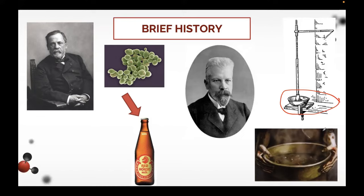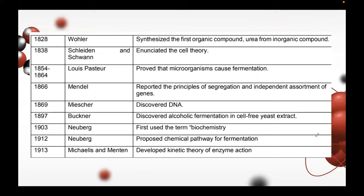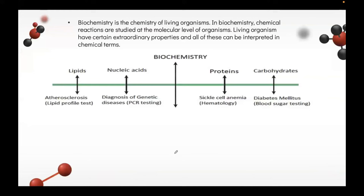That finding proved Louis Pasteur wrong. In 1828, Wöhler synthesized the first organic compound, urea, from an inorganic compound. Schleiden and Schwann enunciated the cell theory. Pasteur proved microorganisms caused fermentation. Mendel reported principles of segregation and independent assortment of genes. Miescher discovered DNA. Buchner discovered alcoholic fermentation in cell-free yeast extract. Neuberg first used the term 'biochemistry' and proposed the biochemical pathway for fermentation. Michaelis and Menten developed the kinetic theory of enzyme action.